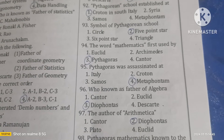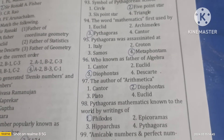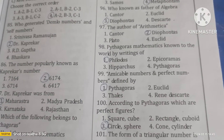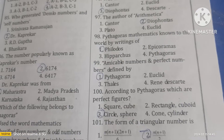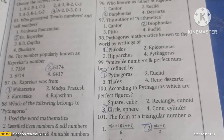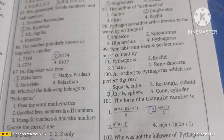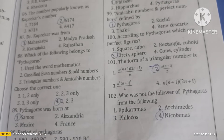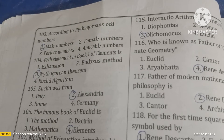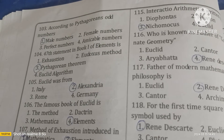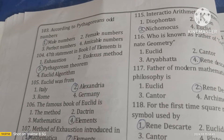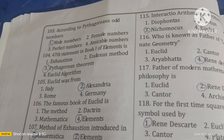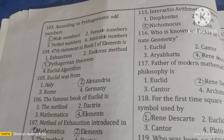The father of algebra is Diophantus, who is also the author of Arithmetica. Pythagoras's mathematics became known to the world through the writings of Philolaus. Amicable numbers and perfect numbers were defined by Pythagoras. According to Pythagoras, perfect figures are circles and spheres. The form of a triangular number is n(n+1)/2. According to Pythagoras, odd numbers are male numbers and even numbers are female numbers. The 47th statement in Book 1 of the Elements is the Pythagorean theorem.